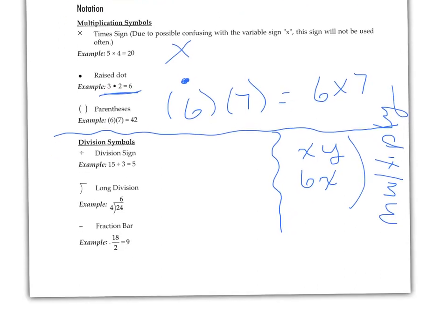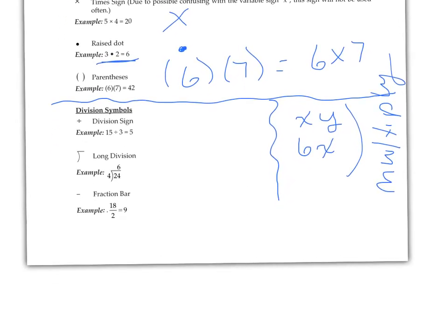There's some division symbols here. The division sign, we don't use this a lot in algebra. We'll use it in order of operations. Long division, the box, and of course the fraction bar. Anytime we use a fraction bar, this means 18 divided by 2. So those are some symbols for multiplication division.